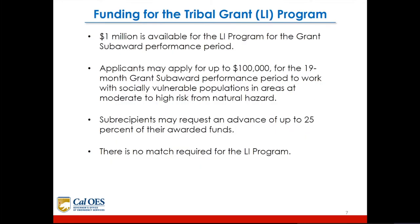$1 million is available for the LI program for the grant subaward performance period. Applicants may apply for up to $100,000 for the 19-month grant subaward performance period to work with socially vulnerable populations in areas at moderate to high risk from natural hazard. Subrecipients may request an advance of up to 25% of their awarded funds. There is no match required for the LI program.